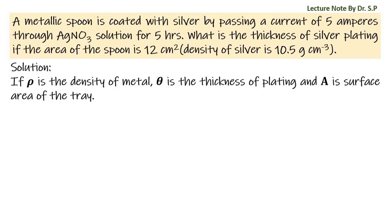If rho is the density of metal, theta is the thickness of plating, and A is the surface area of the tray, then the amount of substance discharged W is equal to chemical equivalent E into current I into time T divided by Faraday constant F. Or: density rho into volume V equals chemical equivalent E into current I into time T divided by Faraday constant F.